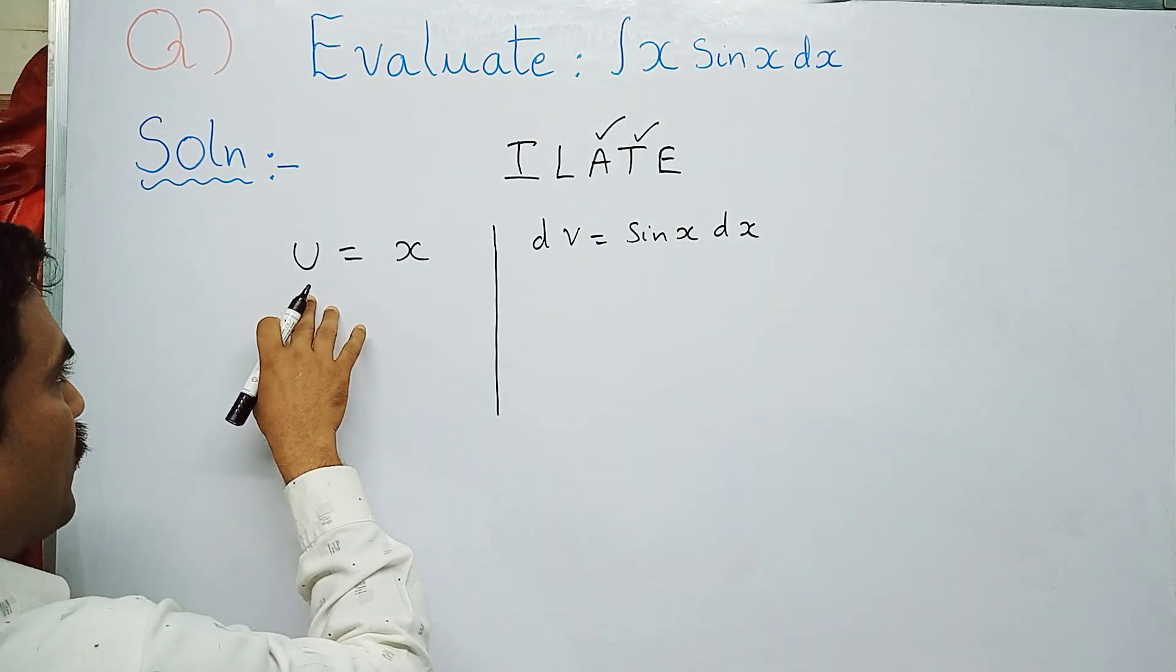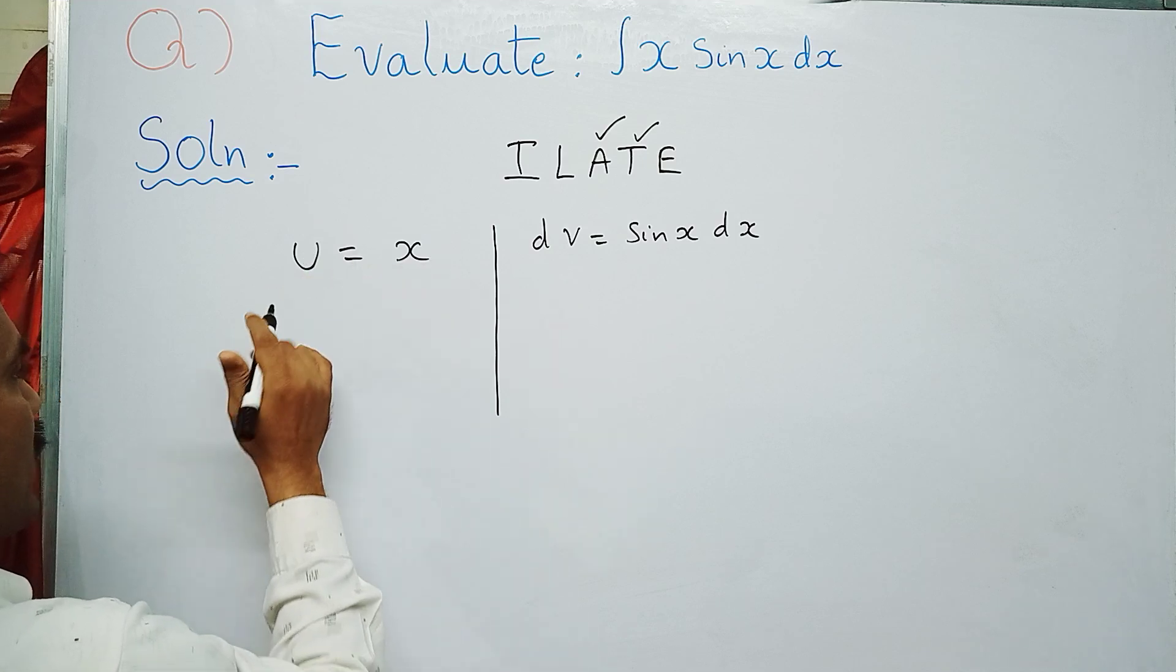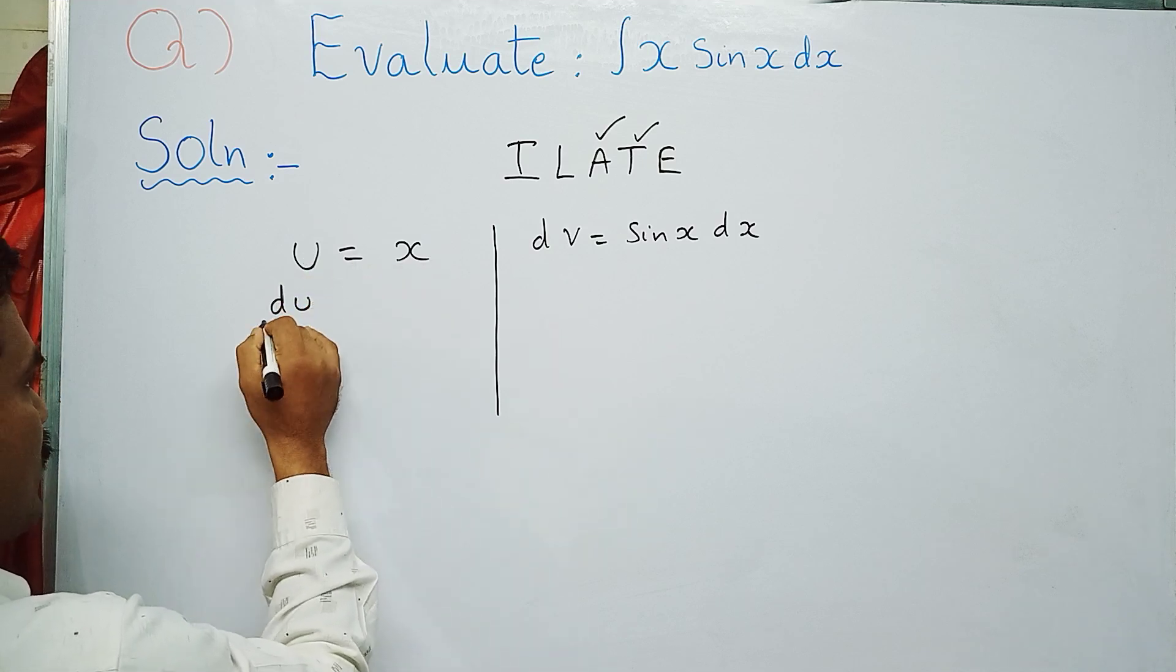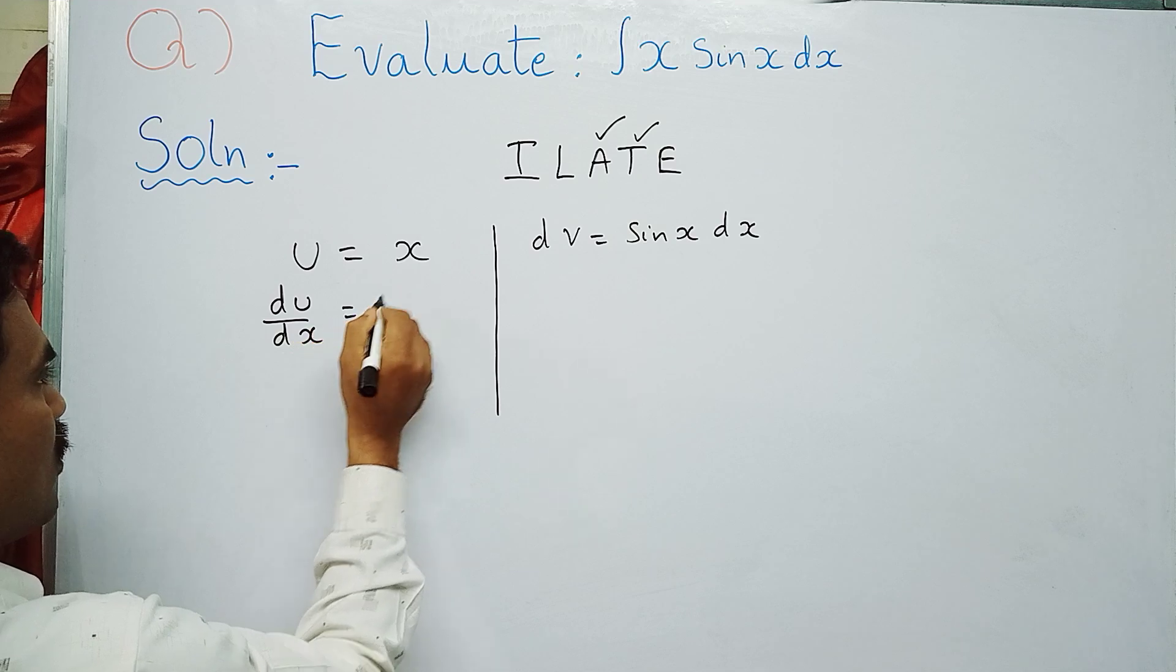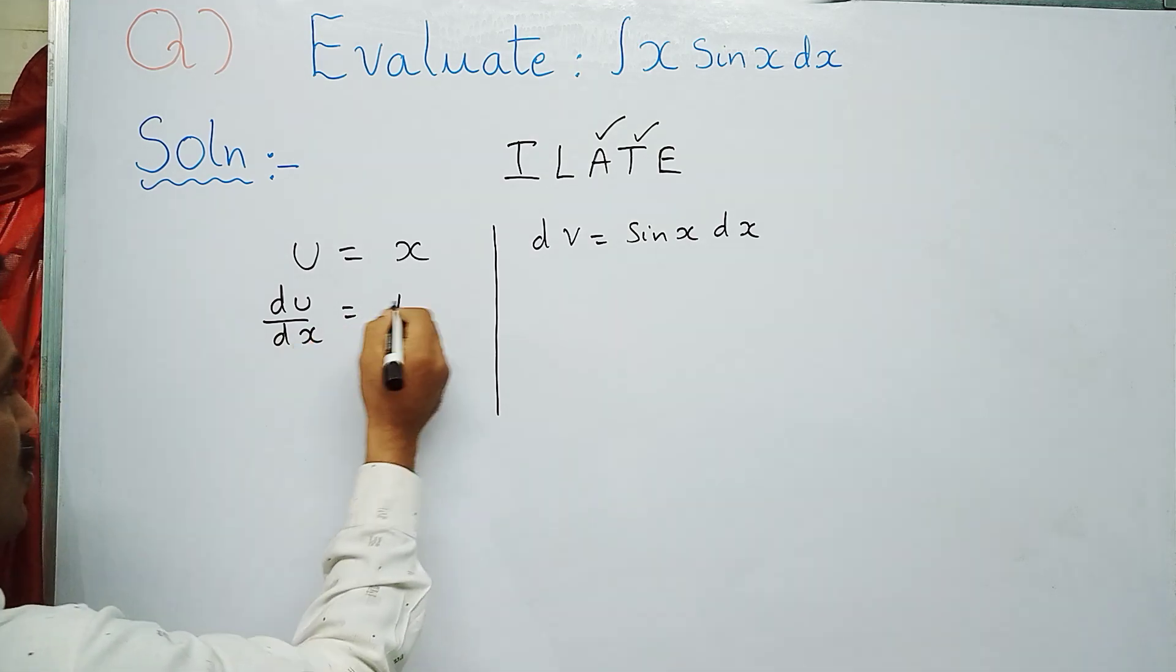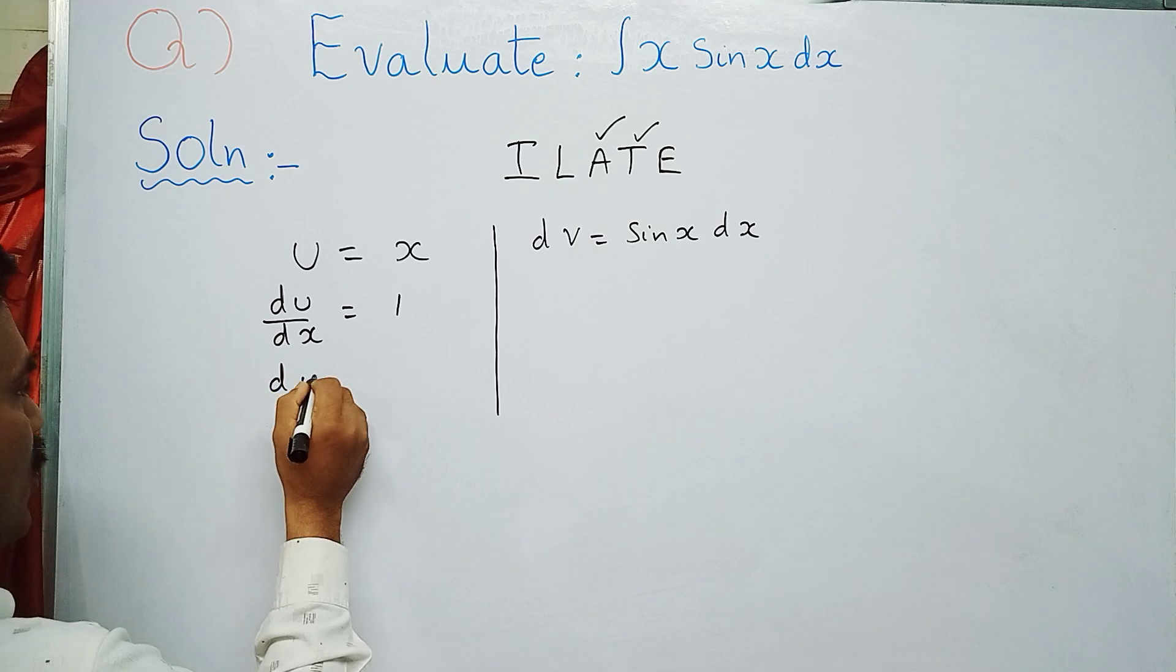First, we will differentiate the left-hand side part. Differentiate on both sides: du by dx equals d by dx of x, which is 1. Cross multiply: du equals dx.